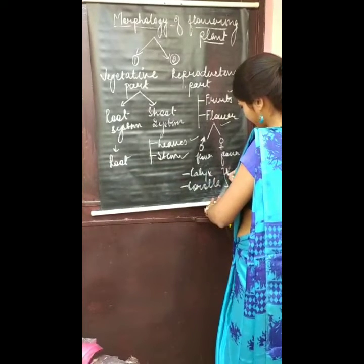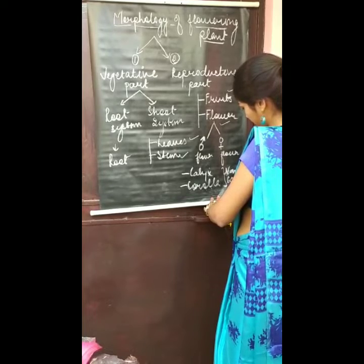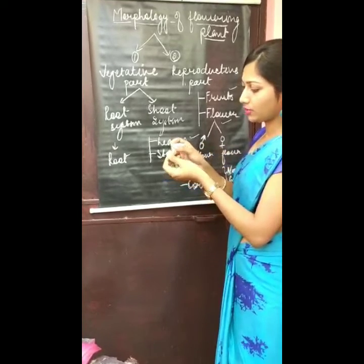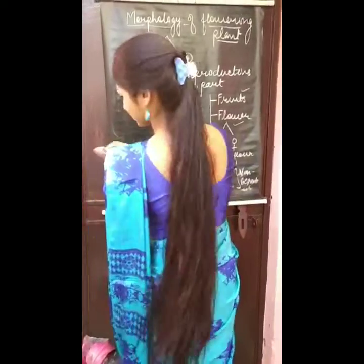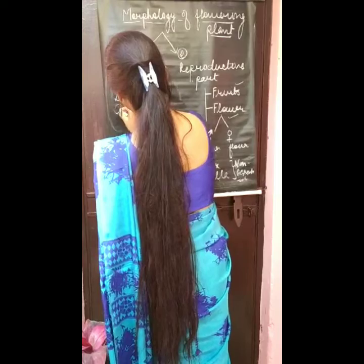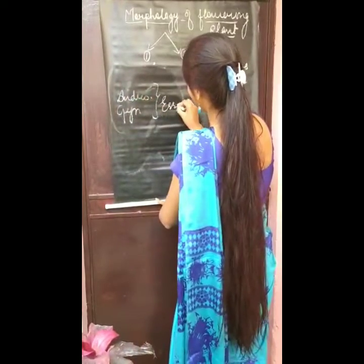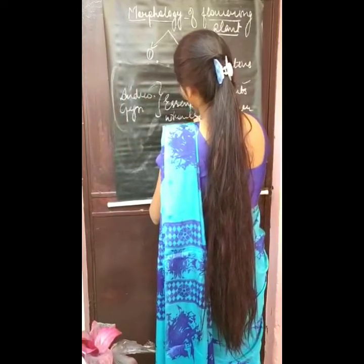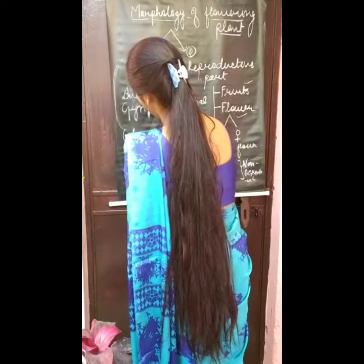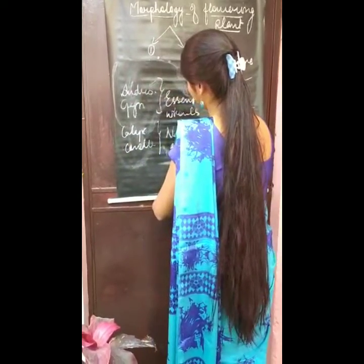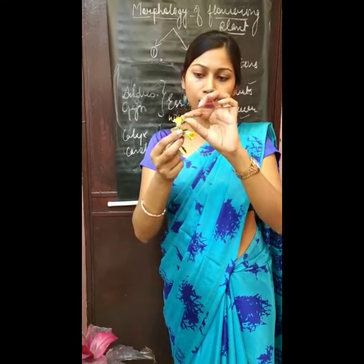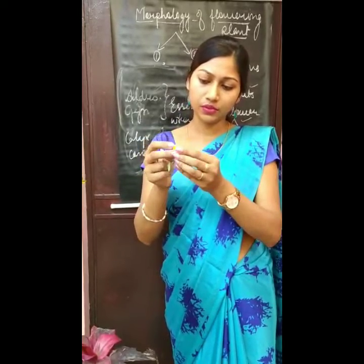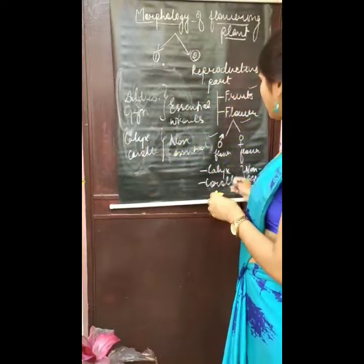The calyx and corolla are called the non-essential whorls, and the androecium and gynoecium are called the essential whorls. So we can say that a complete flower comprises two whorls: first is the non-essential whorl, which includes the green-colored calyx found outside and the colorful corolla; and second is your reproductive part — androecium and gynoecium — which is the most important part of any flower.